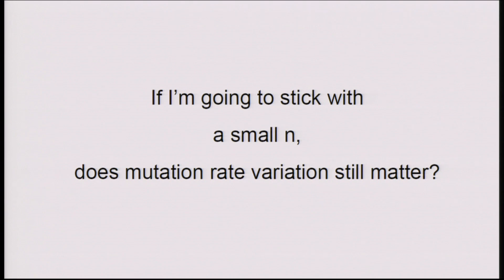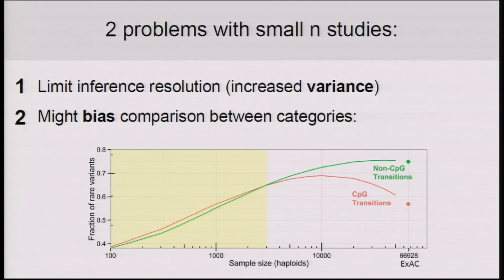You may ask whether this effect is only something to be concerned about with large samples, or whether any of this matters for small-n studies. To look into this question, we computed the expected SFS and expected fraction of rare variants across a range of sample sizes smaller than the EXAC dataset. What we saw was an interesting biasing effect. Smaller sample sizes have the obvious limitation of limiting resolution due to higher variance, but what we saw was a biasing effect. Here I'm showing the SFS of CpG and non-CpG transitions. In the data, CpG mutations have a much lower fraction of rare variants. However, if we look at much smaller sample sizes — on the order of hundreds or thousands — we see a reversing trend where CpG mutations actually seem to have a higher fraction of rare variants.